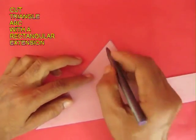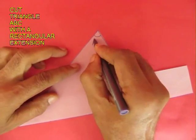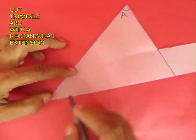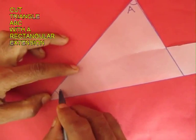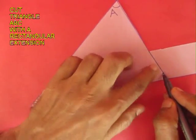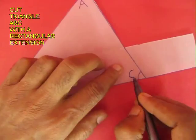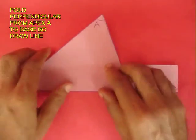Now cut a triangle with an extension from tracing paper. Mark the three internal angles of the triangle A, B and C. Also mark the external angle with a double line and the point B.